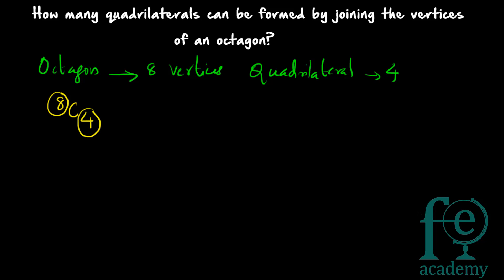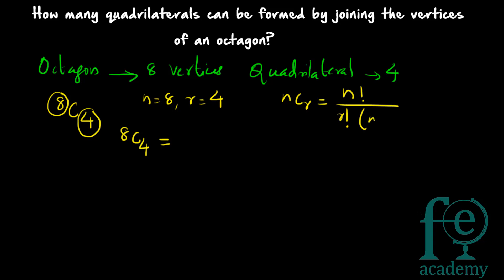So N C R — here N is equal to 8 and R is equal to 4. So what will be your answer? 8C4 is equal to... you know the formula? What is NCR? NCR is equal to N factorial divided by R factorial into (N minus R) factorial.